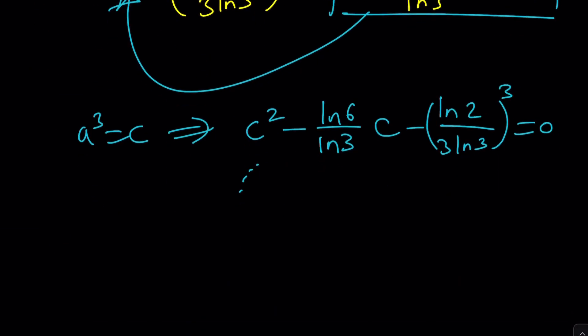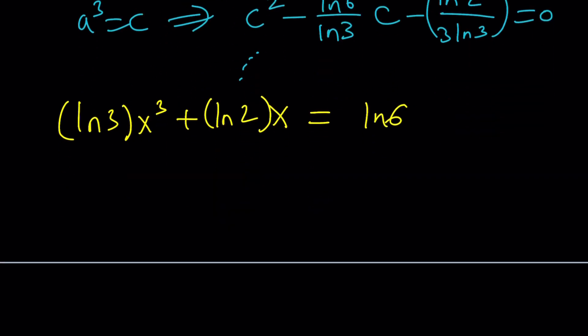So let's go ahead and take a look at the following. I'm going to go back to where I got my cubic equation, maybe to this one. I'll go back to that one or maybe this one. So let's go ahead and write the equation as ln 3 times x cubed plus ln 2 times x equals ln 6.